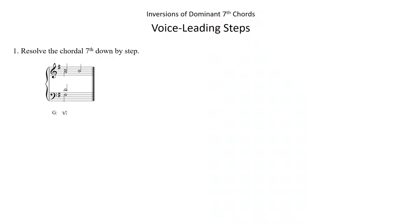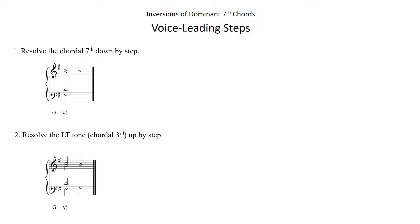In this example in the key of G major, the dominant seventh chord is in first inversion and the chordal seventh is in the soprano voice, and it is moving down by step to the B. Next, resolve the leading tone — or the chordal third if you want to think of it that way — up by step. In this example, the leading tone is in the bass voice, the F sharp, and it's moving up, or resolving up, by step to the G.